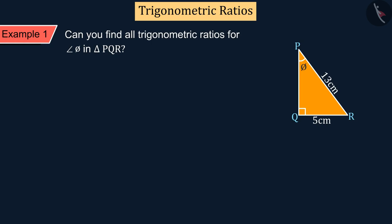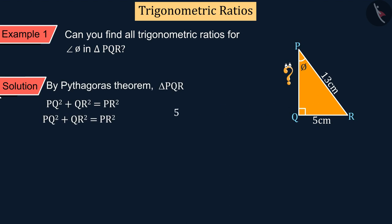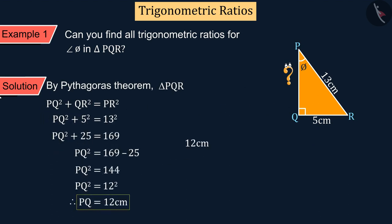We know that to find all trigonometric ratios, we need to know the three sides of a triangle. Can you tell the measurement of the third side of this triangle? Perfect! For this, we can use Pythagoras theorem. From this, we get the length of PQ 12 cm.